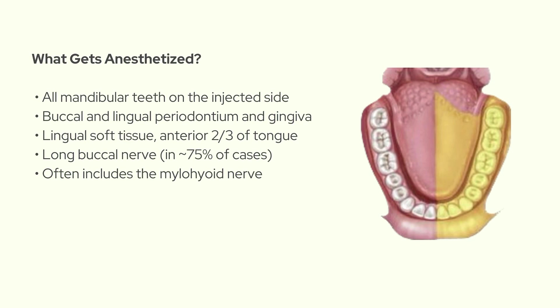First off, what exactly does the Gow-Gates block anesthetize? It's designed to target the mandibular nerve before it even branches. That means you're ideally getting all the mandibular teeth on that side, plus the periodontium, the gingiva from the molars all the way up to the midline, the lingual soft tissues, and even half the tongue.